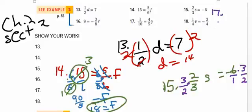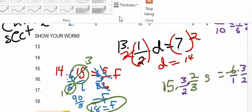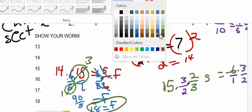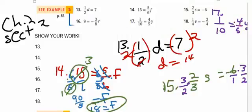Number 17 is 1 tenth equals 4 fifths times y. And that means that we need to multiply both sides by the reciprocal of the fraction that is next to the variable. So make sure you know which one you're going to multiply by the reciprocal. We need to take the reciprocal of 4 fifths, and that is 5 fourths. So I'm going to multiply both sides by 5 fourths.